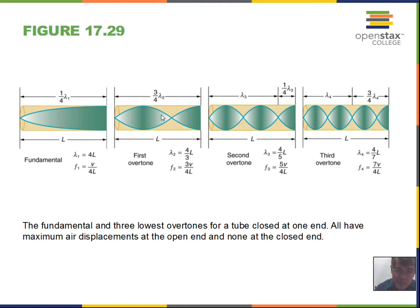Correction: from anti-node to node is a quarter wavelength, and from node to anti-node is a quarter wavelength. So one quarter wavelength equals L, meaning wavelength equals 4L. In the situation with three quarter-wavelength segments — anti-node to node, node to anti-node, anti-node to node — three times one quarter wavelength equals L. Multiplying both sides by 4 and dividing by 3, we find the wavelength is four-thirds times L.